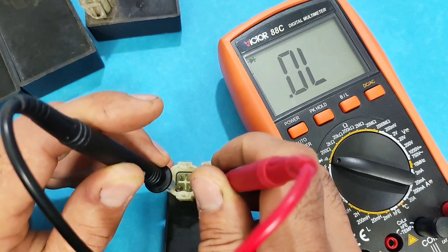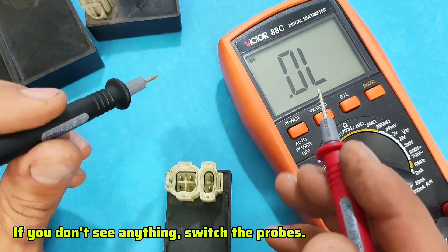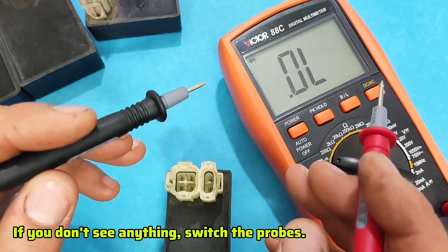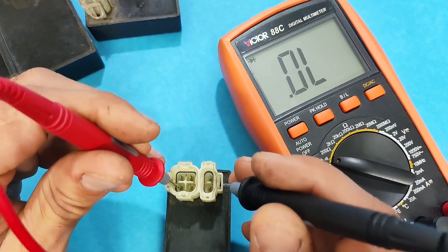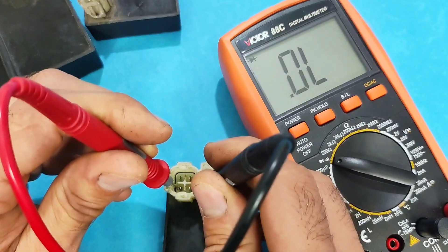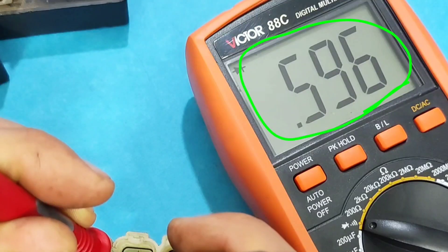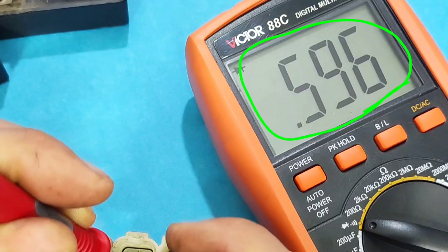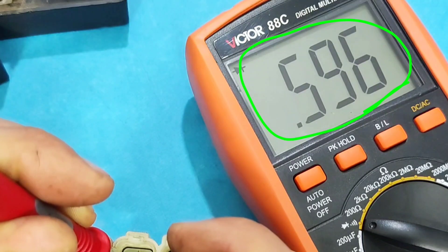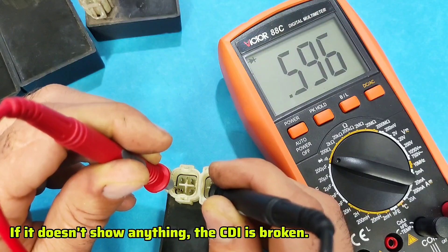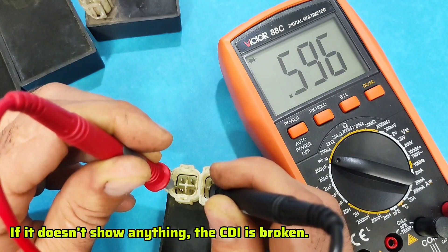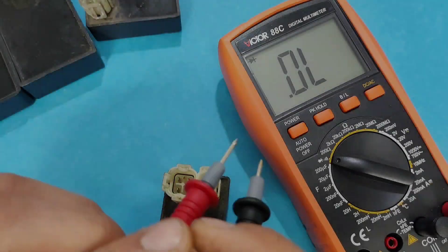No function. If no value appears, switch the probes. If you see a resistance value, the CDI is functional, but if it shows zero or continuous beep, the CDI is defective.